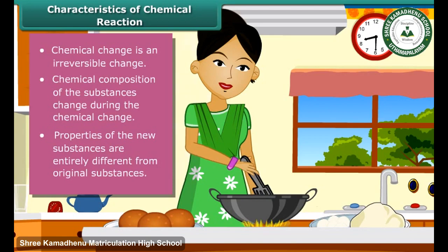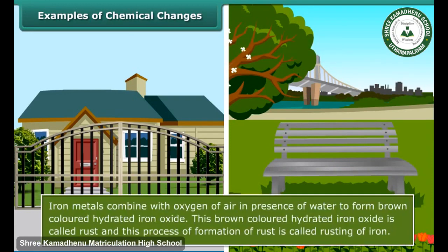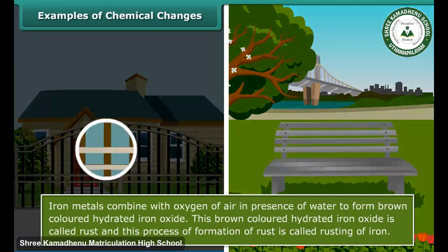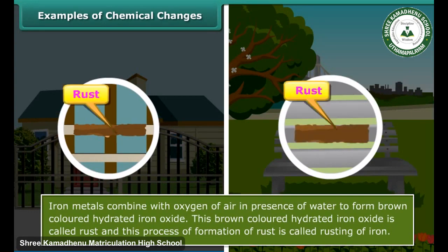Chemical changes cannot be reversed by physical means. You can see many chemical changes in your daily life. Have you seen an iron gate or iron bench in a garden with a brownish film on it? This brownish film is called rust, and the process of formation of this film is called rusting.